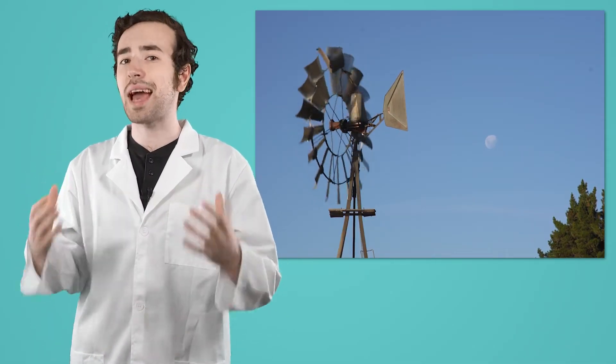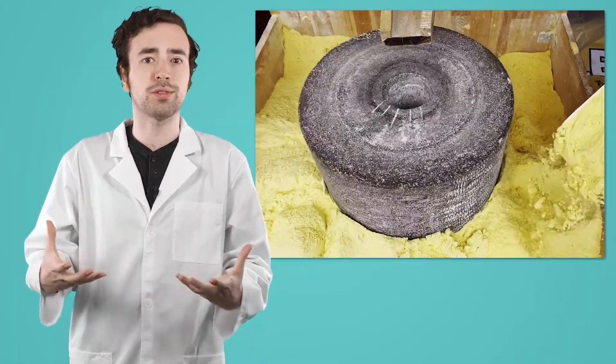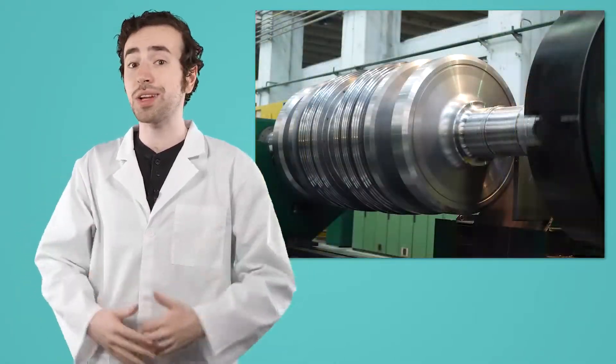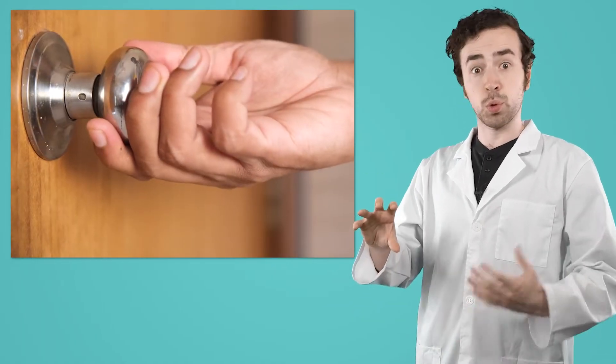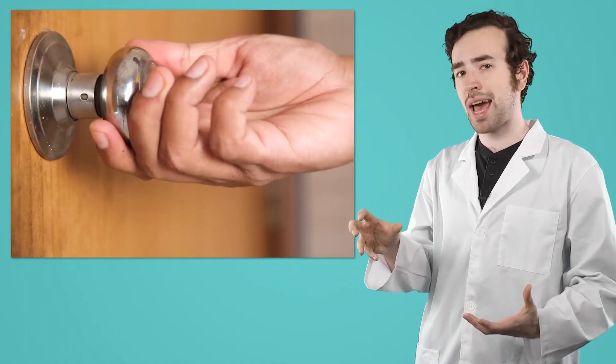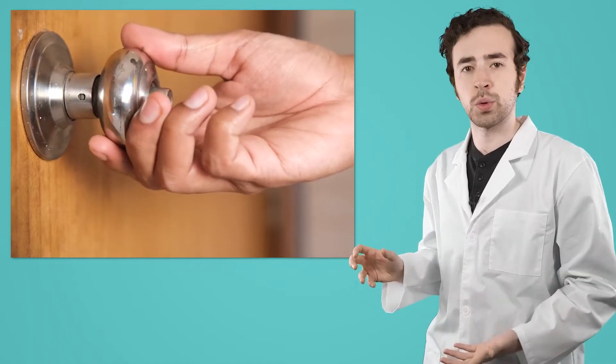Wheels and axles aren't just used for transportation, though. Take a windmill, for example. The wind pushes on the blades, which are connected to a wheel, and that wheel spins an axle. That redirected force can be used to accomplish tasks like grinding wheat to turn into flour, or even generating electricity. Even a doorknob is an example of a wheel and axle at work. Spinning the knob — the wheel — turns an axle, which releases a latch, allowing the door to open.